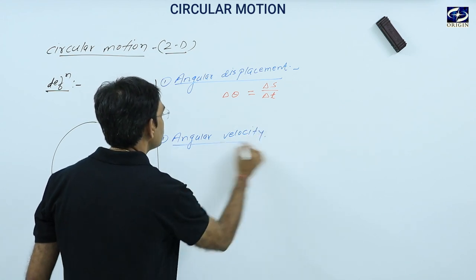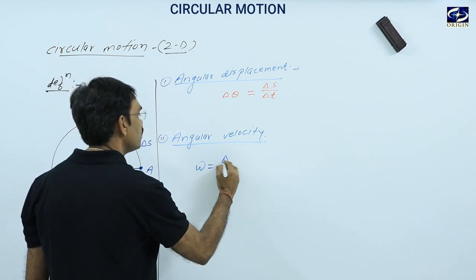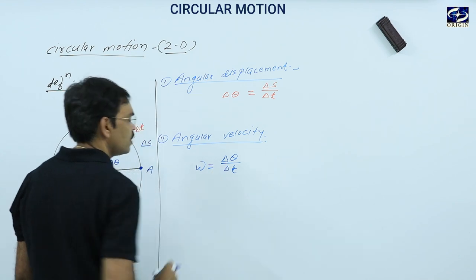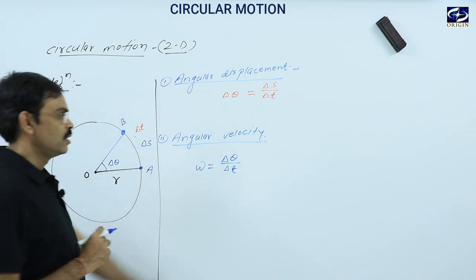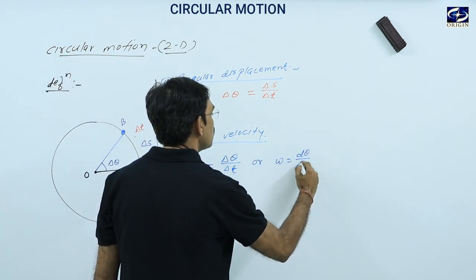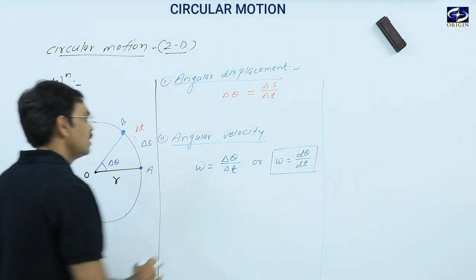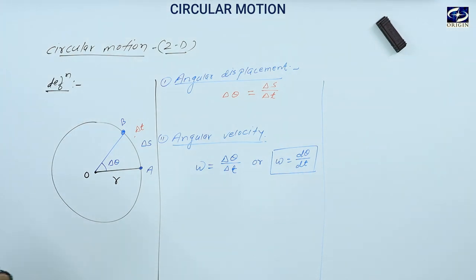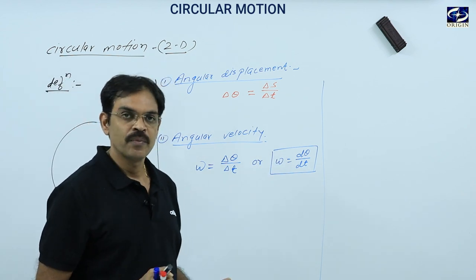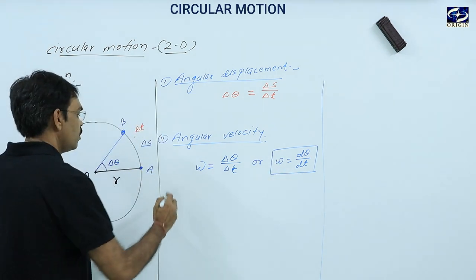Angular velocity is represented by omega. Omega equals del theta upon del T, and it is also represented as omega equals D theta by DT in calculus form. That means the rate of change of angular displacement with respect to time is called angular velocity, and it is represented by omega.